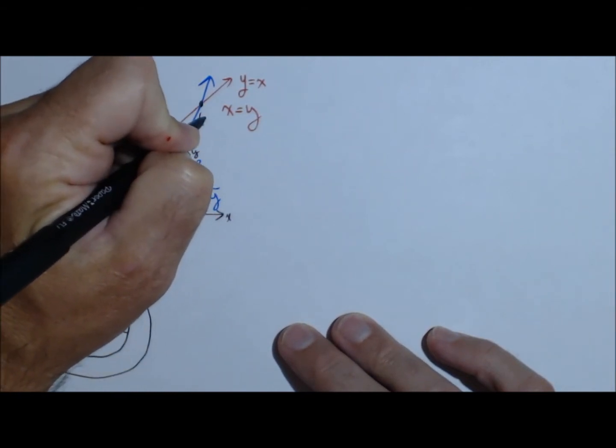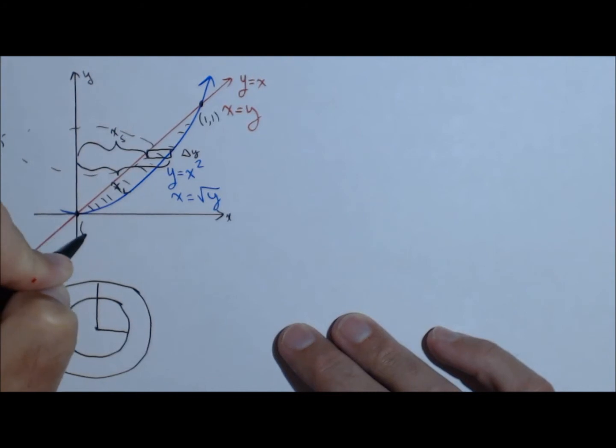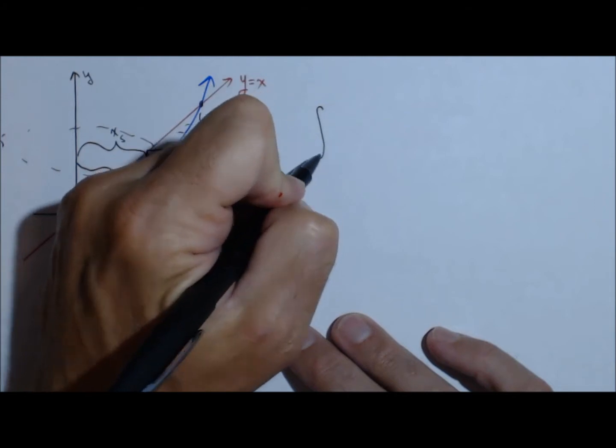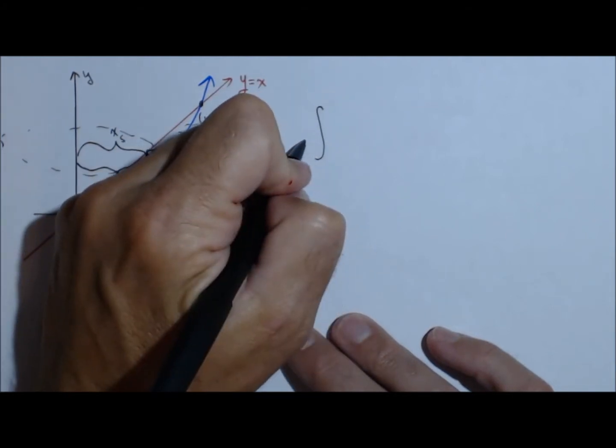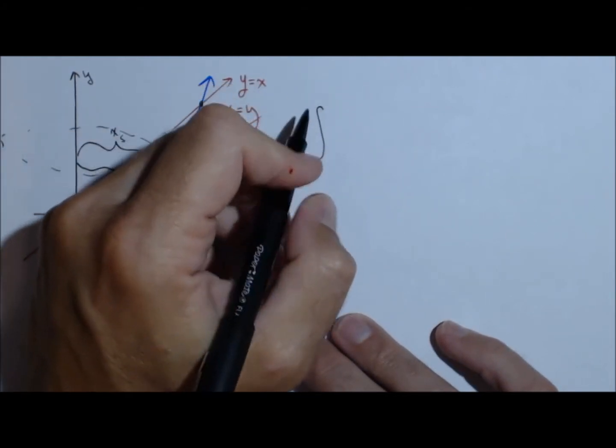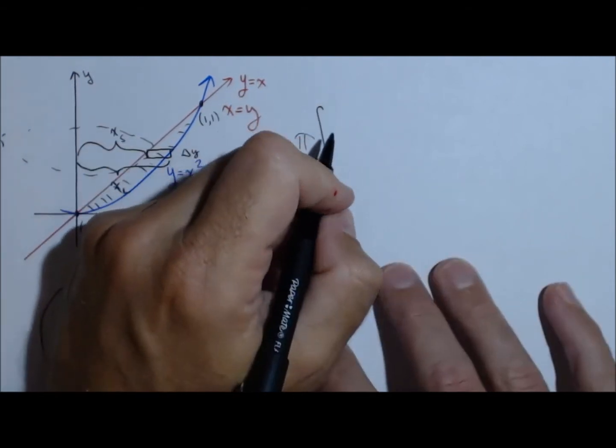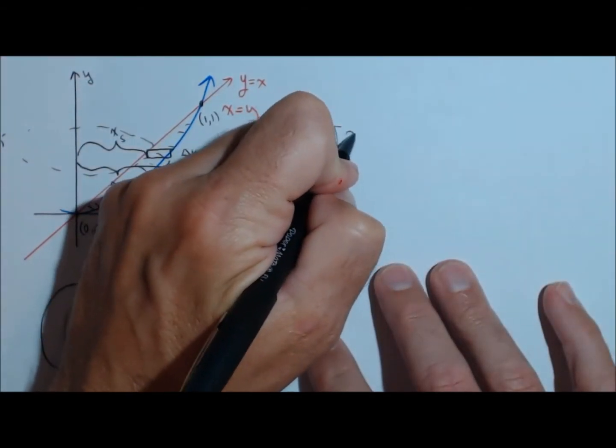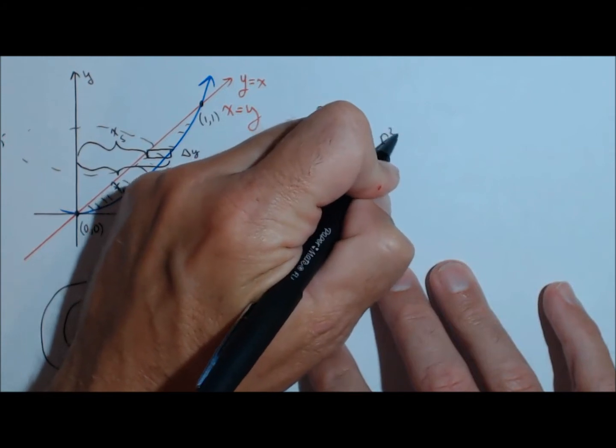We also need their intersections, one, one, and zero, zero. Now, the setup is generally the same as for going around the x-axis or a horizontal axis, which we've seen. Pi times big radius squared minus little radius squared.